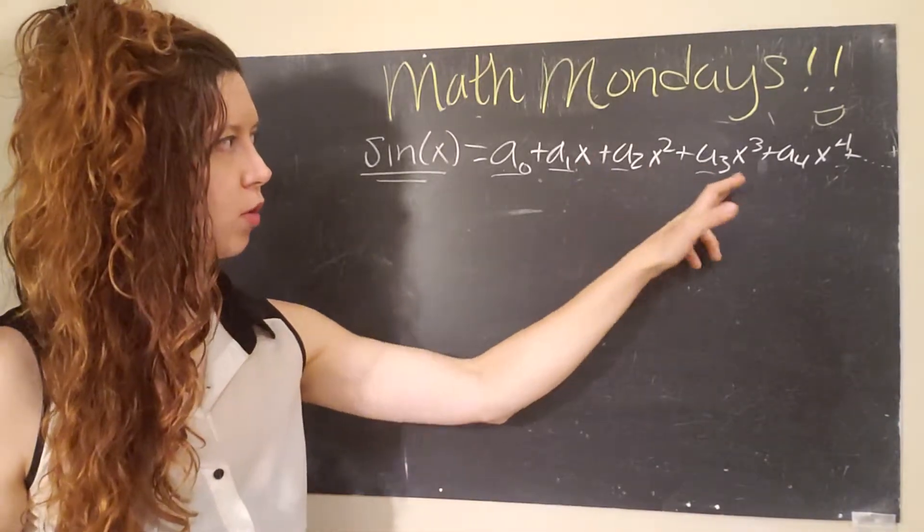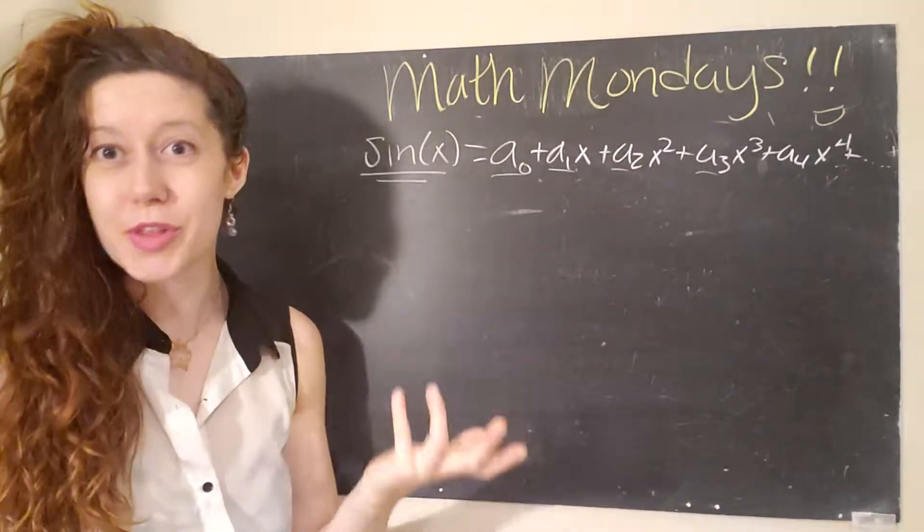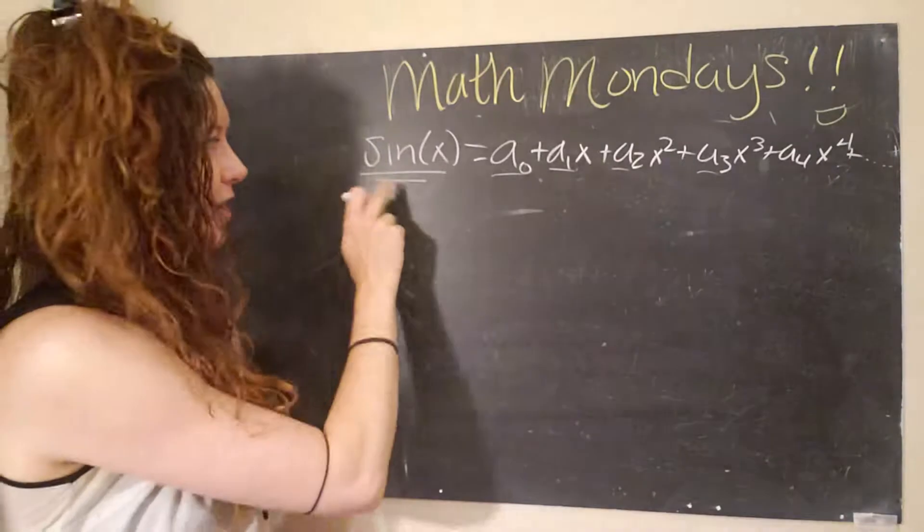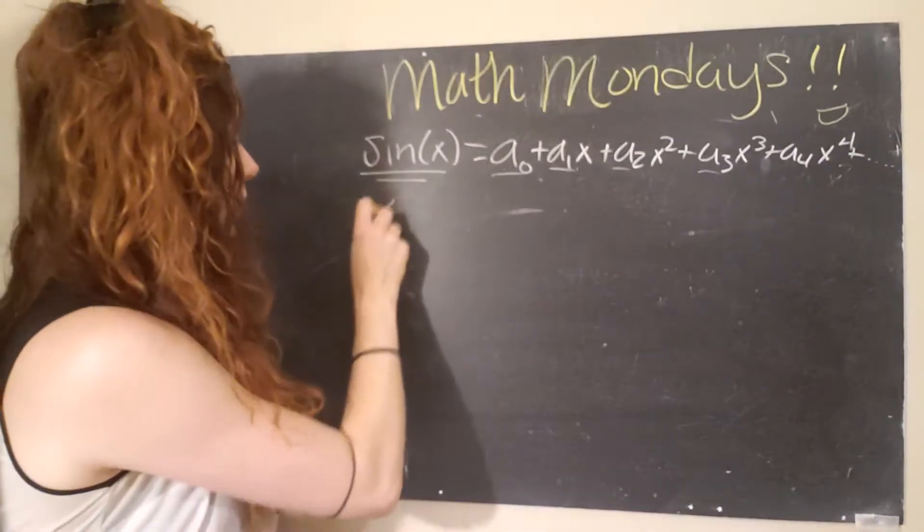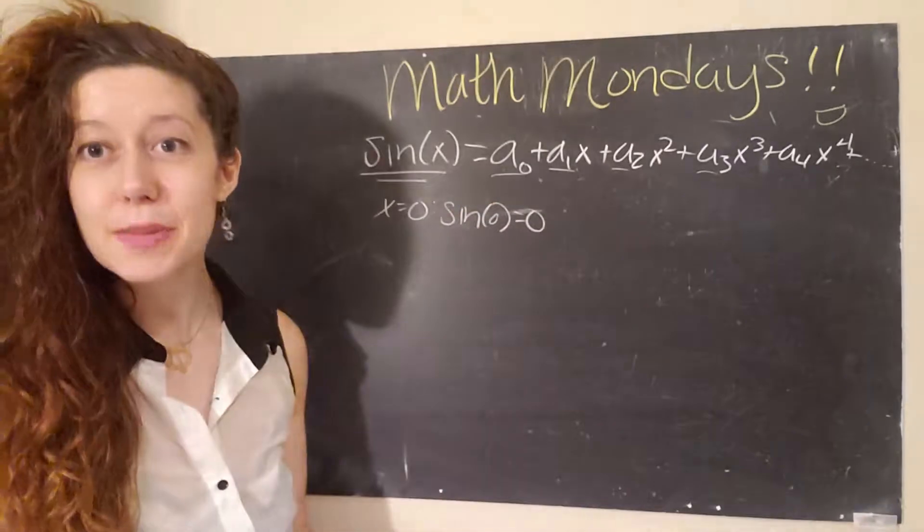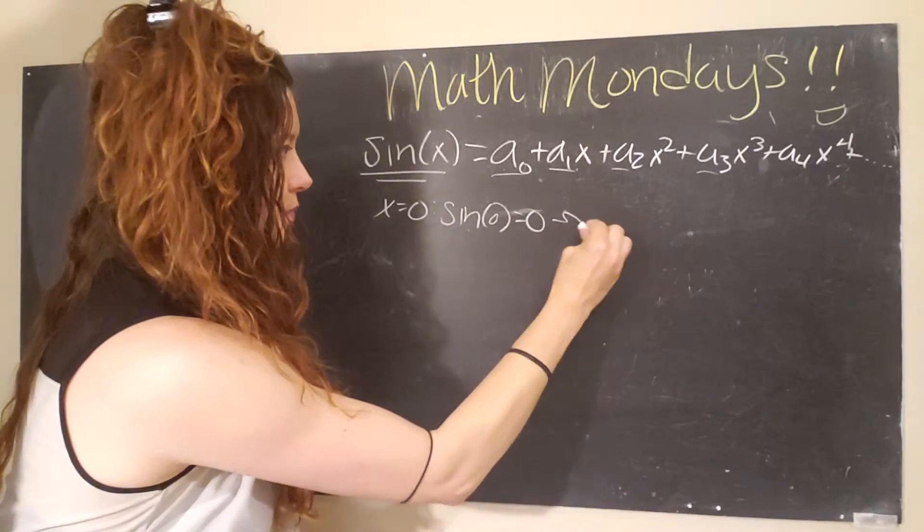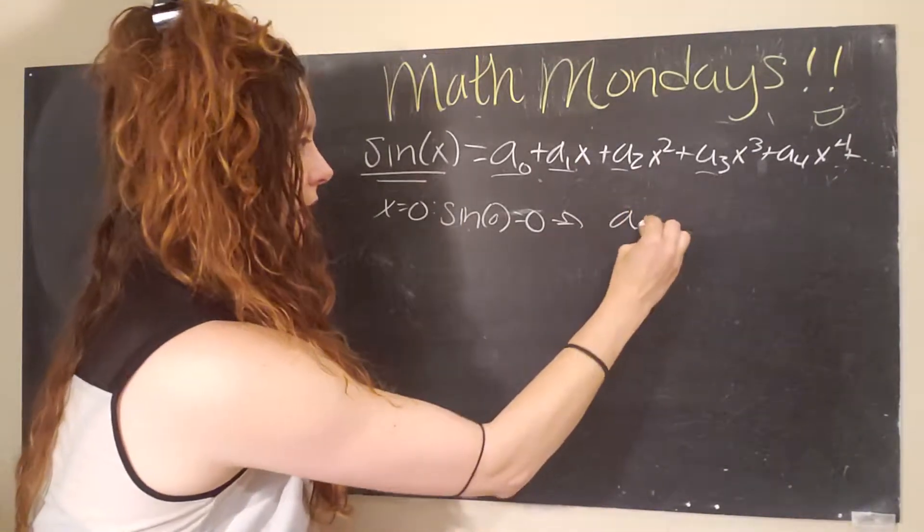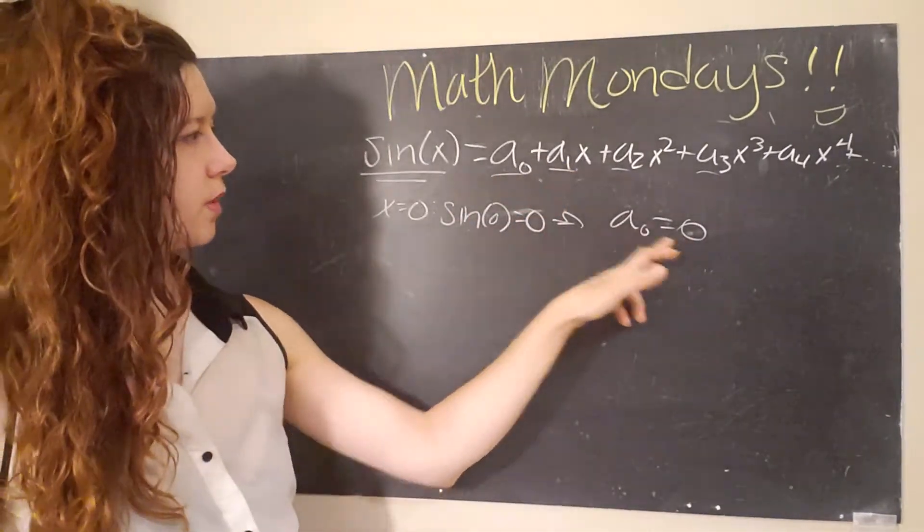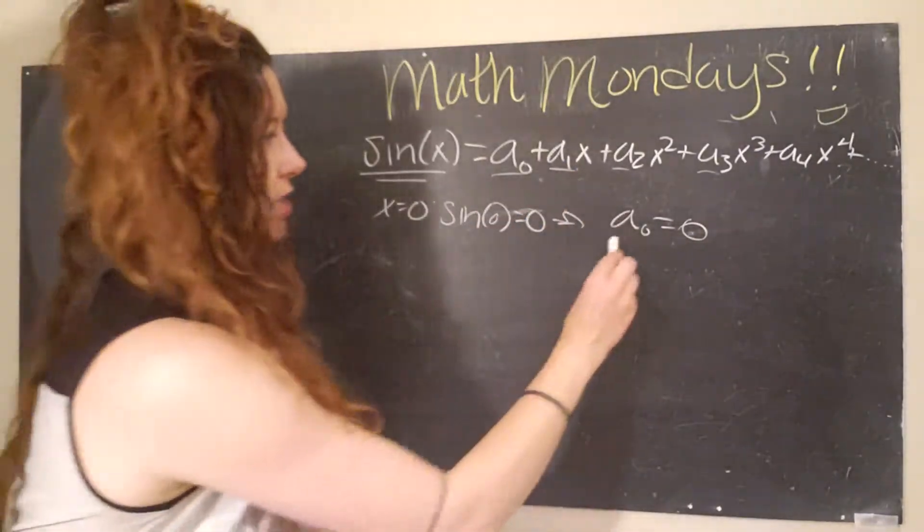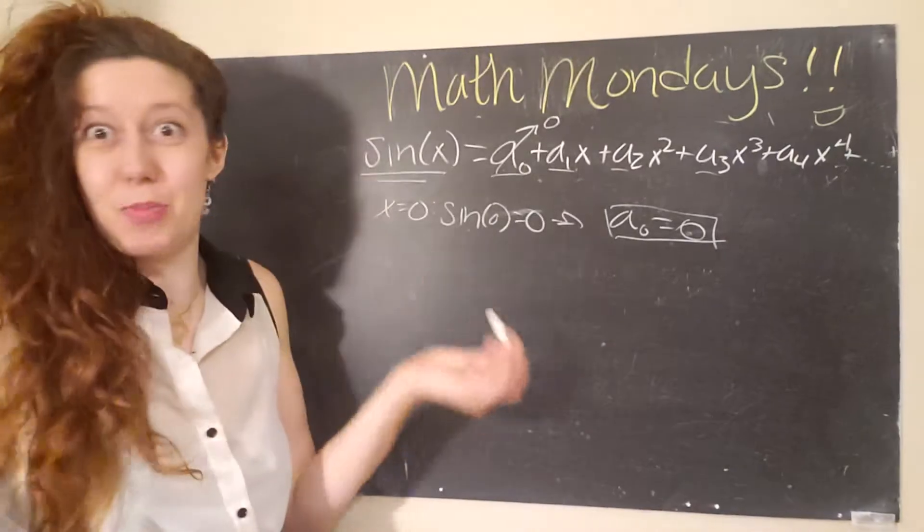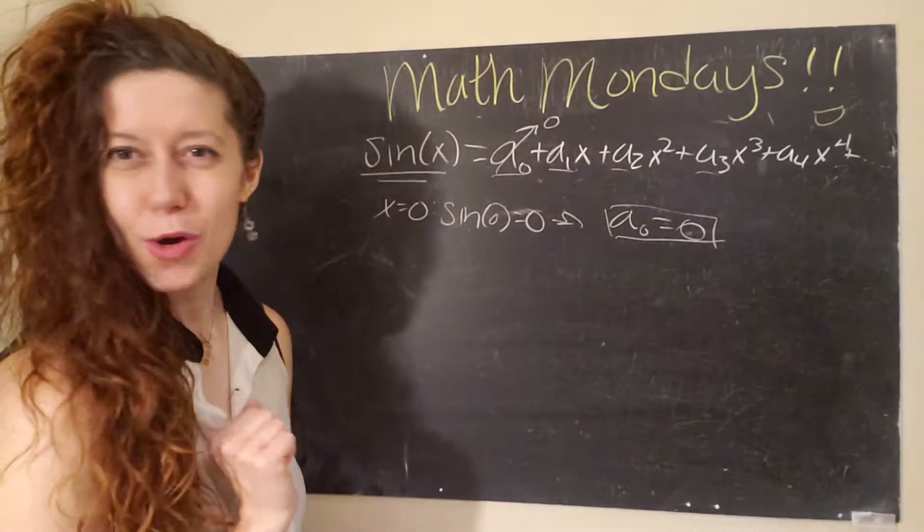So hopefully, as I've been talking, you've been thinking, well, how do we get rid of all of these terms with an x in it? Well, let's pick our boundary condition of x equals zero. It also happens to be very nice for sine of x, because when x equals zero, sine of zero equals zero. Easy peasy. So all of these terms go to zero, and you get zero equals zero. Because if all you're left with is a zero, then a zero must fulfill this condition. So we say that that goes to zero. Okay, that's pretty straightforward, right? First coefficient, no problem.